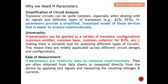Another reason why we need H parameters is the ease of measurement. H parameters are relatively easy to measure experimentally — they are often obtained from a datasheet or measured directly from the device by applying a test signal, then measuring the resulting voltage and current to obtain the H parameters.